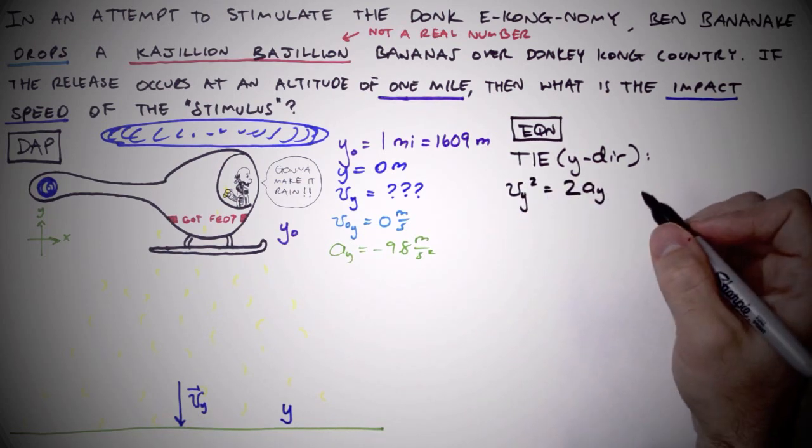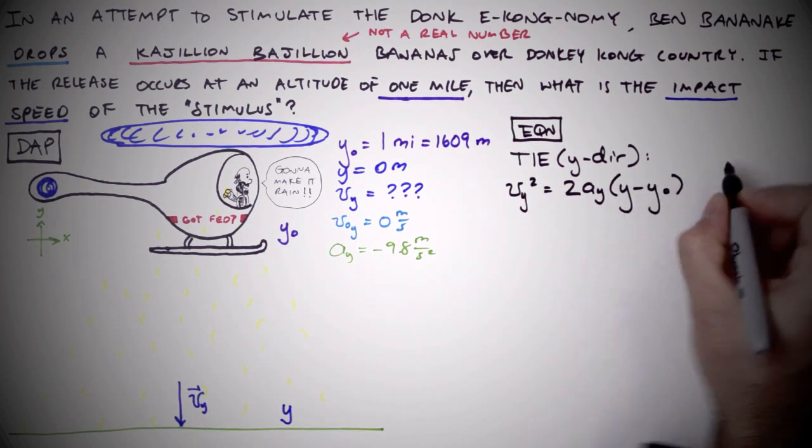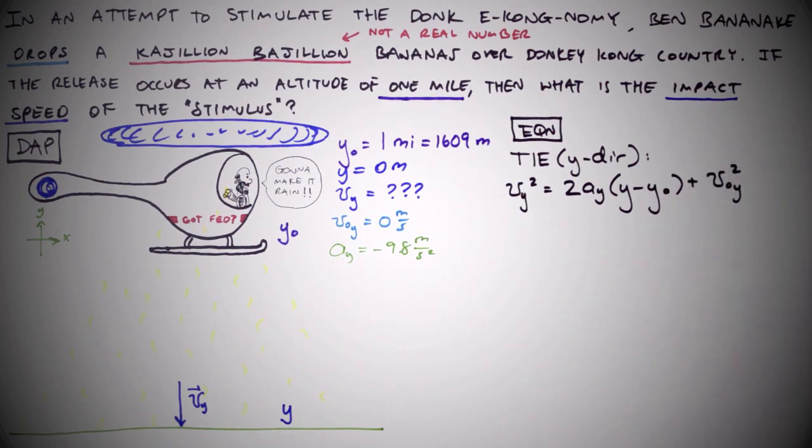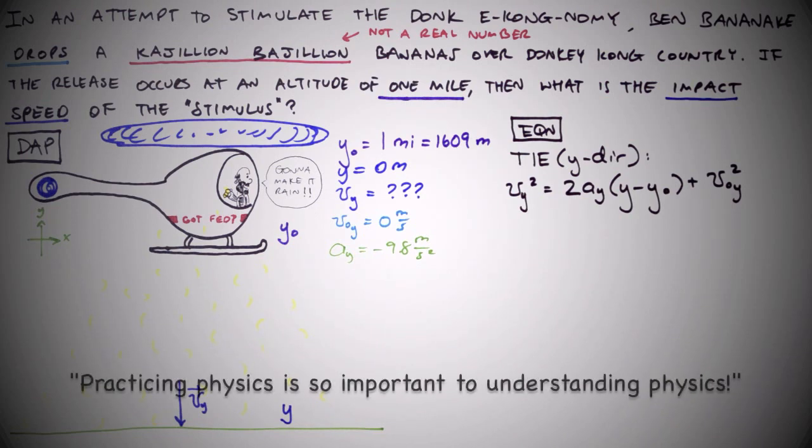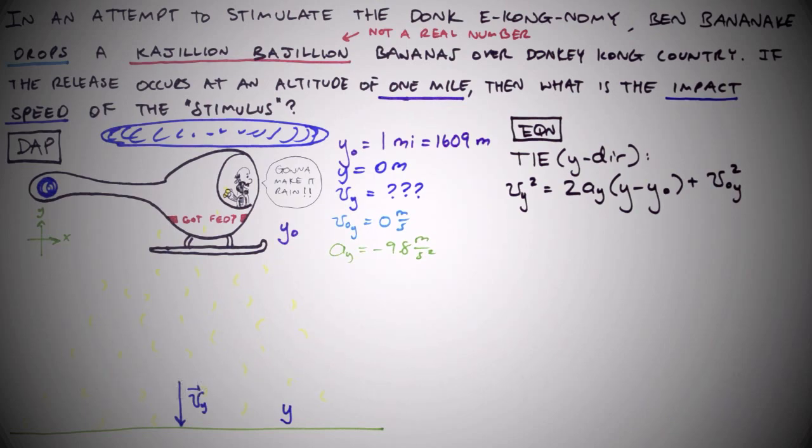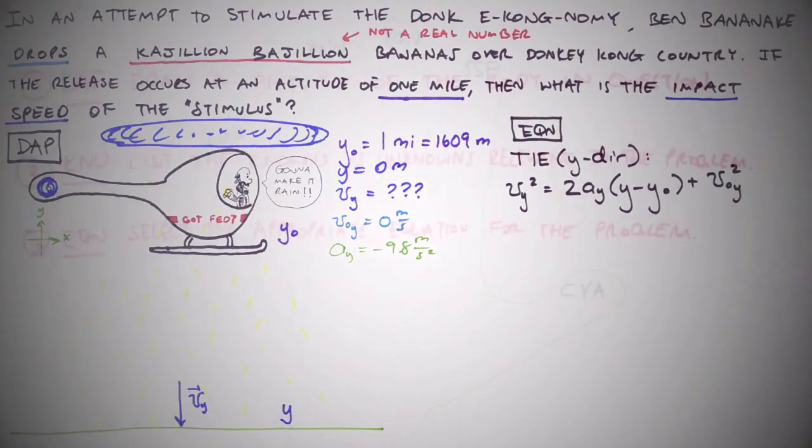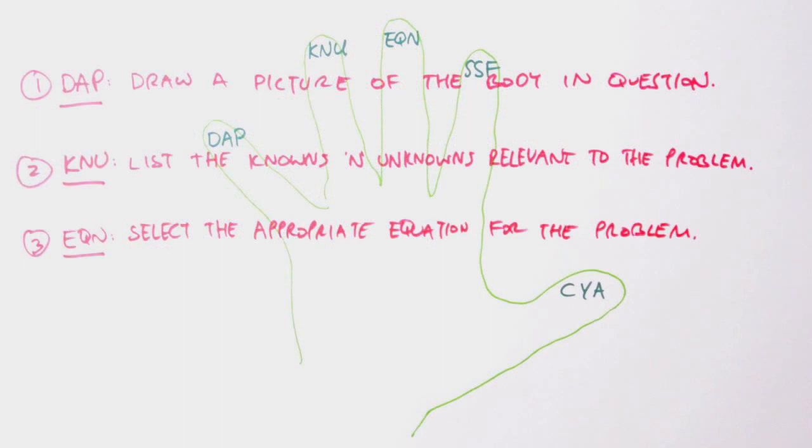One must first understand the conceptual underpinnings of the equations and their relevance to the problem, which really only comes with practice, which is why practicing physics is so important to understanding physics. Of course, if a problem really has you flummoxed, a last-ditch attempt at equation selection can be made with trial and error.